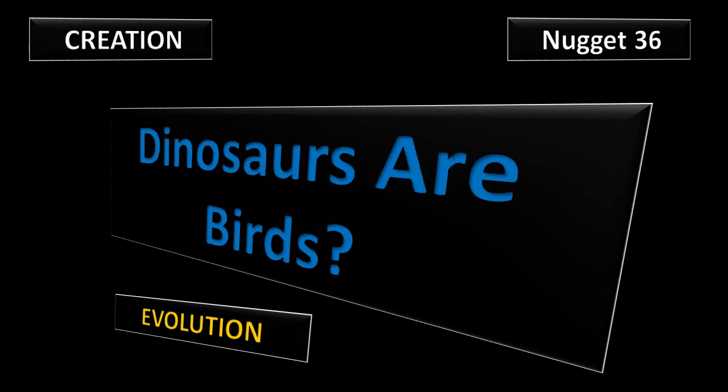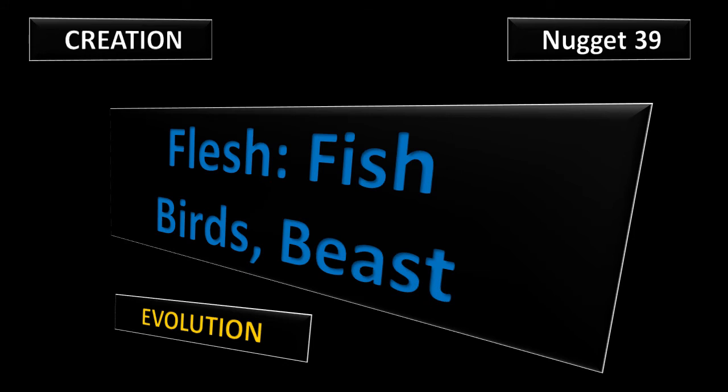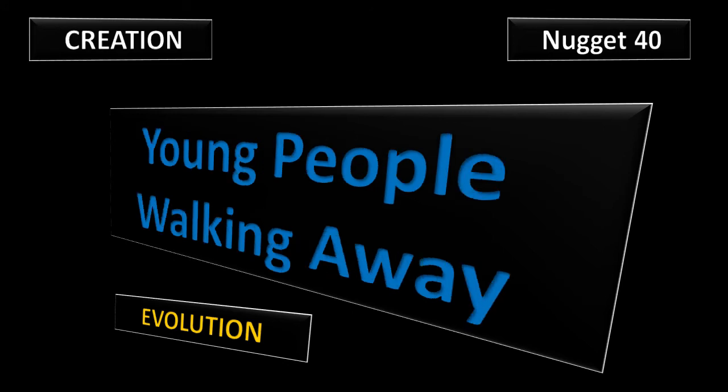Nugget 36: Dinosaurs are now the birds? Are you kidding? Well, that's what evolution teaches. Learn more in Nugget 36. Nugget 38: Fear and Dread. Meat Eaters. Were dinosaurs always carnivores? Nugget 39: Flesh. The Bible says there's one kind of flesh of fish, another of birds, and another of beasts. Does this prove creation or evolution?